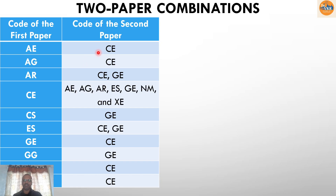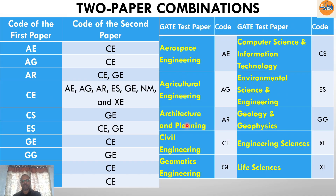Regarding the two-paper combination: for civil engineering students, the applicable papers include AE, AG, AR, CE, CS and GE. For civil engineers, CE and GE (Geomatics Engineering) are the preferred combination as they are closely related. AE is Aerospace Engineering, AG is Agricultural Engineering, AR is Architecture, CE is Civil Engineering, and GE is Geomatics Engineering. Since we are opting for CE as the first paper, GE is recommended as the second paper — choosing GE also opens admission options in IITs under the geomatics engineering stream.